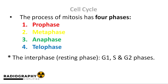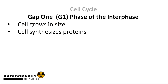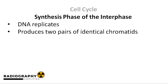Now let's analyze these steps one by one. We start out with gap one. This is a gap phase that occurs between the last round of mitosis and the synthesis phase. In this phase, the cell grows in size and synthesizes proteins that would be useful during the proper mitotic phase. Next is the DNA synthesis phase. In this phase, the DNA molecule of the cell replicates into two identical molecules. This process ends with the cell having two pairs of chromatids that are completely identical.